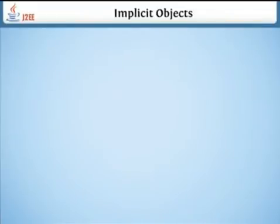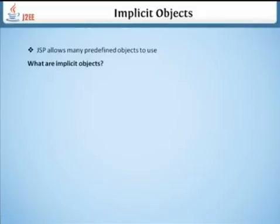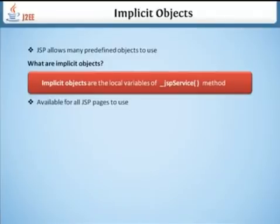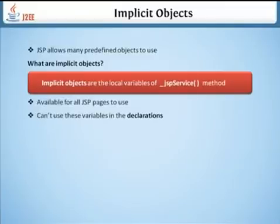Implicit objects. JSP allows many predefined objects to use. Implicit objects are the local variables of JSP, available for all JSP pages to use. They cannot be used in the declarations section.